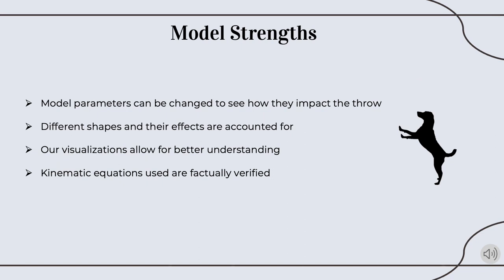Our model's strengths are as follows. Having built generality into our model, we are able to change the model's parameters and variables to determine how each changes Fritz's likelihood of catching the object thrown. Our model also accounts for different shapes of the food items that would be thrown to Fritz. Because different shapes have different kinematics, this allows us to theoretically analyze which foods would be the most catchable. Our third strength is that our interactive visualizations allow for greater flexibility when conceptualizing the problem. And finally, in using equations that have been factually verified, we add a robustness to our model that potentially would be different had we created equations that were less well understood.